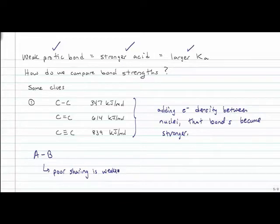How can I make two atoms not share very well? Well, the best way is to have a large electronegativity difference. So a large difference in electronegativity weakens the covalent nature of the bond.